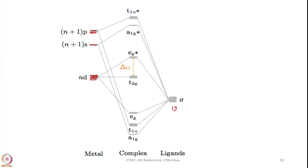We have a total of 12 electrons that have to be accommodated. Let us not worry about how many electrons we have in the d orbitals of the transition metals — that is immaterial now. If the 12 electrons are coming from 6 ligands as 6 pairs, they will be placed here. You can see this is how molecular orbitals formed by combining ligand orbitals with the two d orbitals — in this case dx²-y² and dz² — generate bonding molecular orbitals in which these 6 pairs of electrons are accommodated.